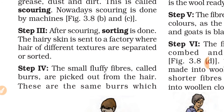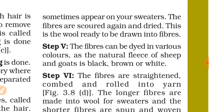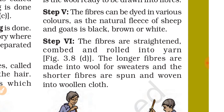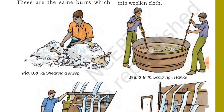In the third step, after scouring, sorting is done. The hairy skin is sent to a factory where hairs of different textures are separated or sorted. Small fluffy fibers called burrs are picked out from the hair — these are the same burrs that sometimes appear on your sweaters. Next, the fibers can be dyed in various colors, since the natural fleece of sheep is black, brown, or white. The fibers are then straightened, combed, and rolled into yarn.